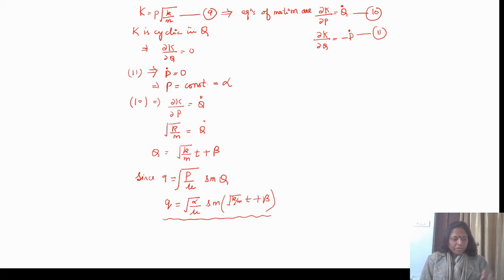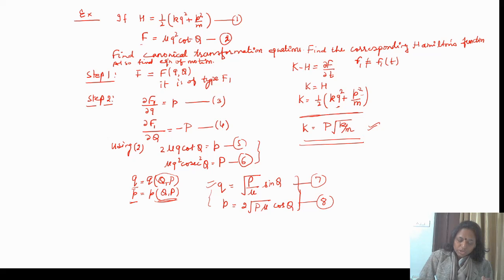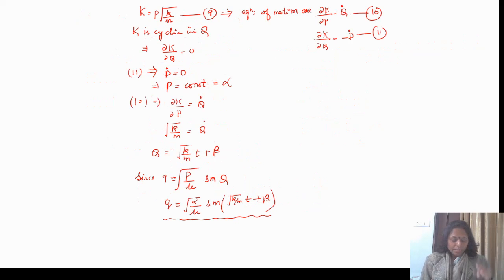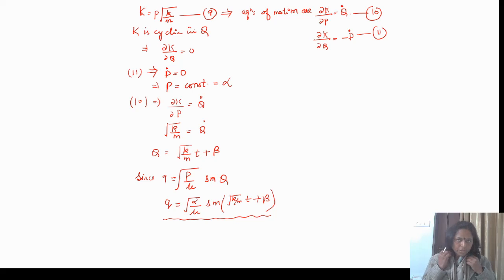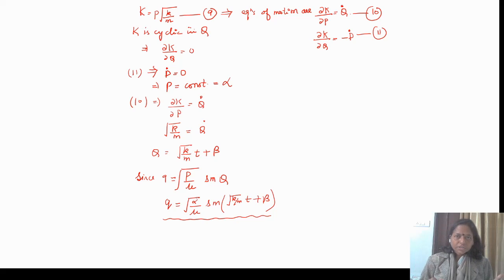So we have done three parts in this question. First, I found the canonical transformation equations (equations 7 and 8). Then I found the new Hamiltonian K. Keep in mind that the new Hamiltonian should be in terms of new coordinates only. Then in the third part, I found the equation of motion. In this way, if any generating function is given, first you recognize its form. Now I will explain other generating functions which we can create with the help of our first generating function.